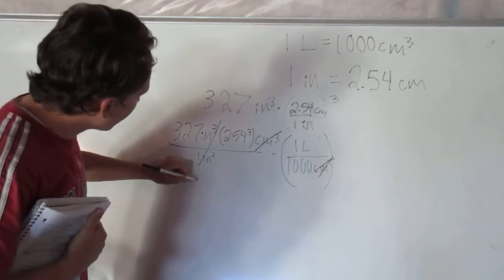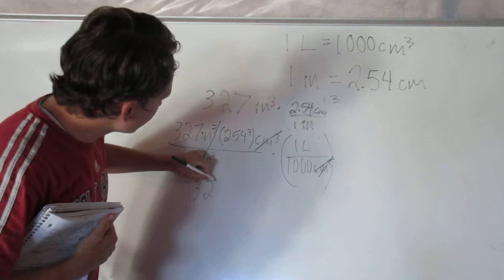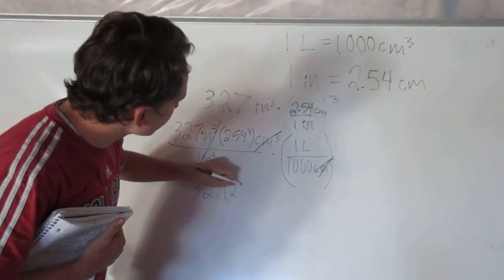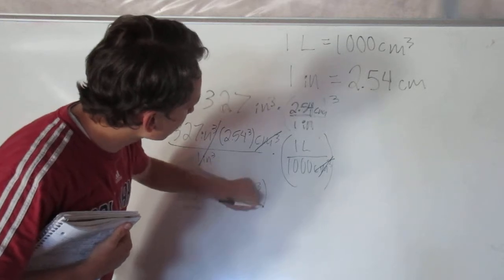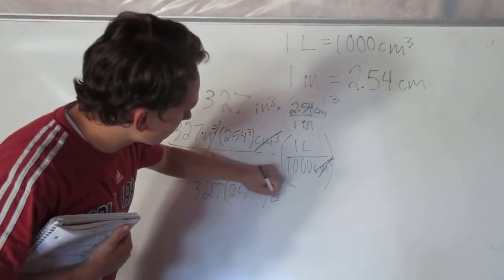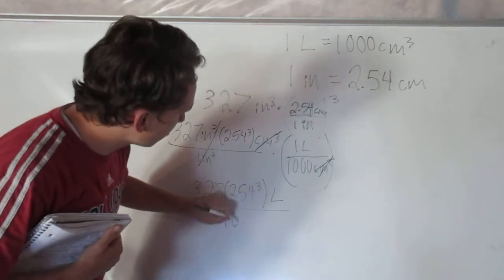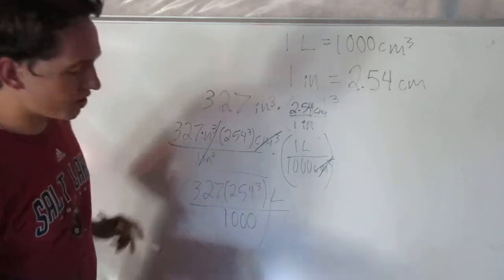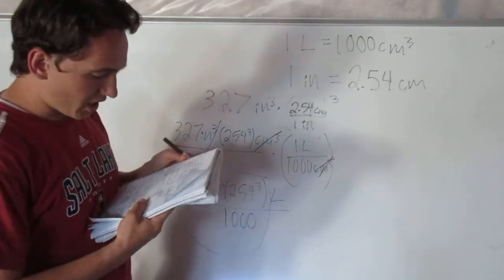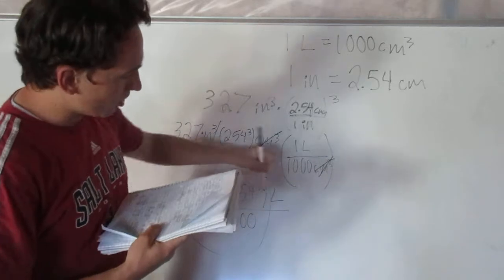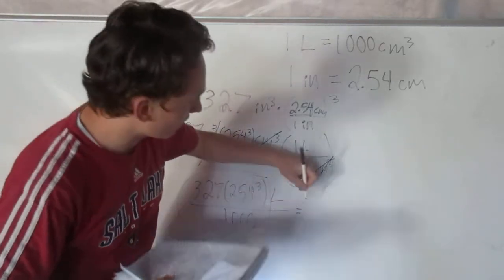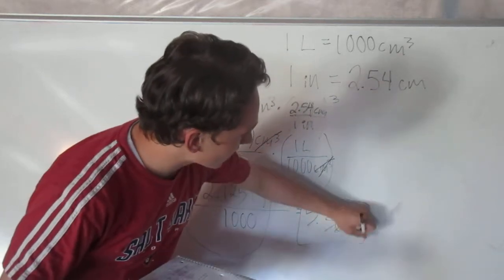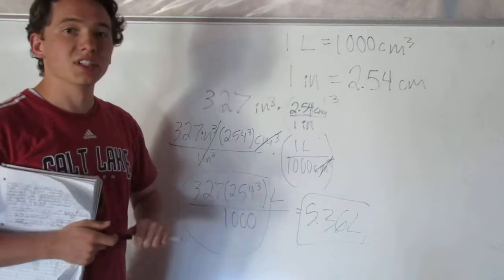What we're actually going to end up with is 327 times 2.54 to the third liters divided by 1000. Now if you put this number into your calculator, I'm going to get an answer out, and it's actually going to be, if you're using the correct number of significant figures, 5.36 liters. And that is the displacement in liters.